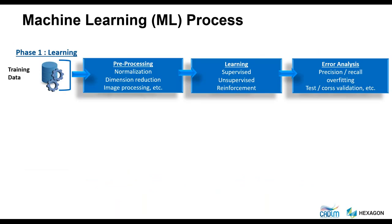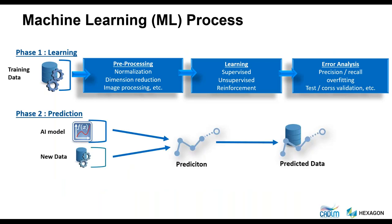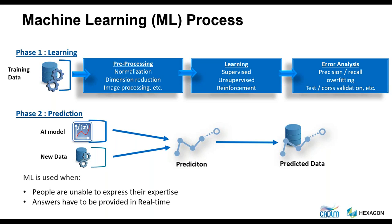Without getting into the details of a typical machine learning process, we basically have a first phase where the machine learns from data — historical data that could be from test, simulation, or anything else. That model builds a new AI model that is able to predict, and in turn delivers predicted data. So the system enriches itself and gets tremendous value if we know how to use it, process it, and approach it.